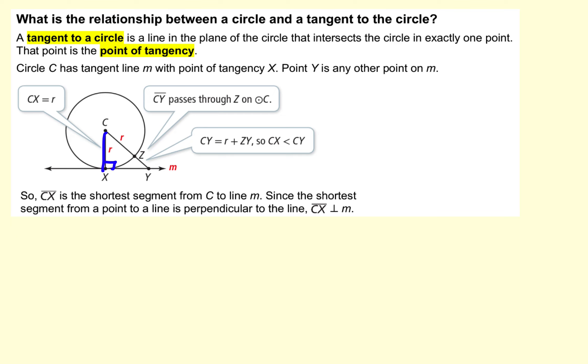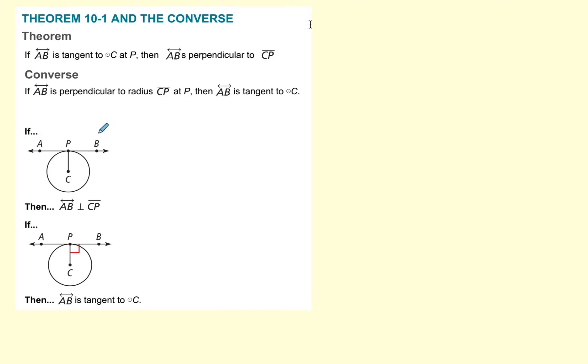That's what the next theorem says. If something is tangent, it has to be the shortest path. Therefore, it has to be perpendicular.